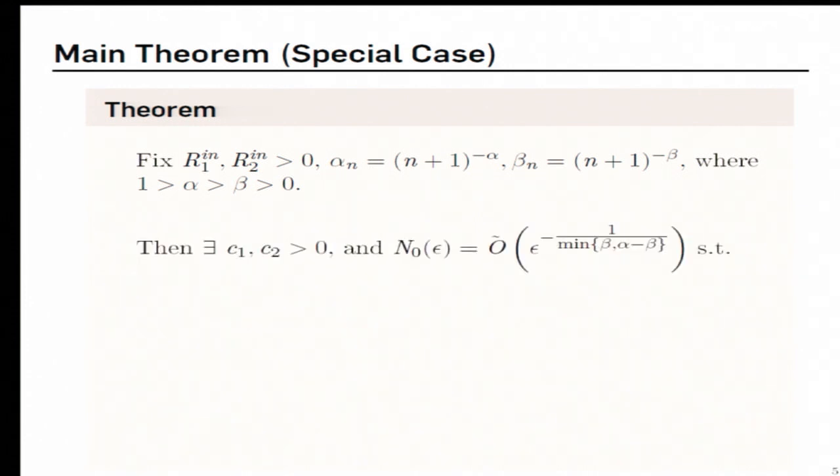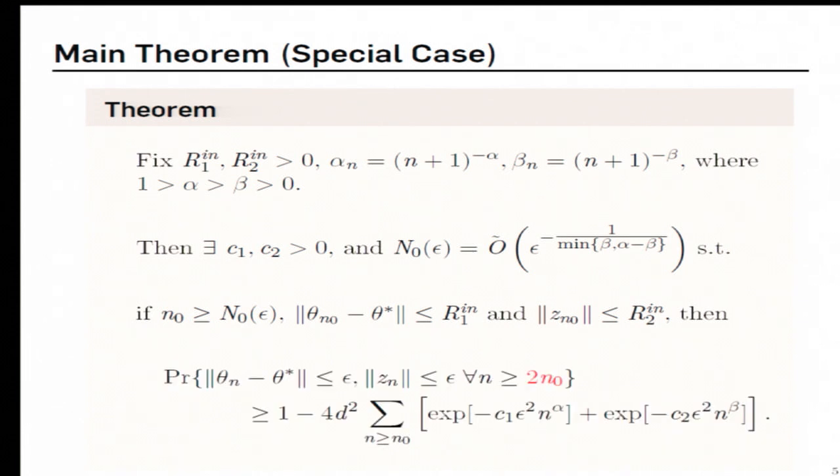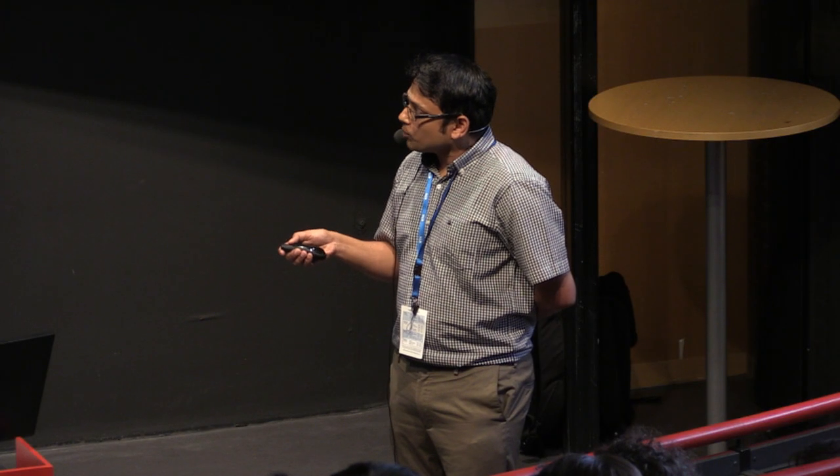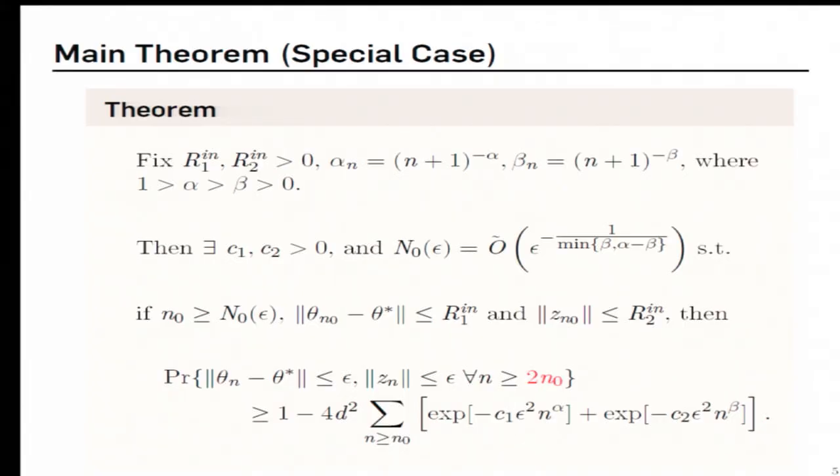So our result says that we have some small constants c1 and c2 and a function of epsilon given with this order behavior. Such that if we have a little N0 larger than this function and the N0 iterate of theta and the N0 iterate of z line some suitable R1, R2 radii balls around their respective solutions. Then from time 2N0 onwards, the iterates will actually be in the epsilon ball and stay there thereafter. Okay, so this is not a deterministic event, this is a probabilistic event. So we have an estimate of the probability with which this will happen. This expression over here goes to 1 as N0 goes towards infinity. So this result is what is usually known in the stochastic approximation literature as a concentration bound.